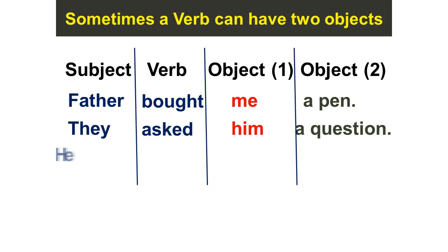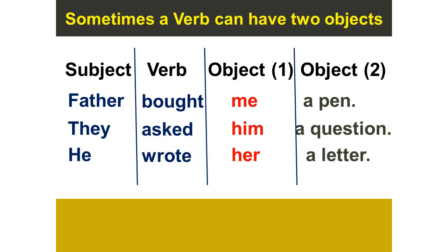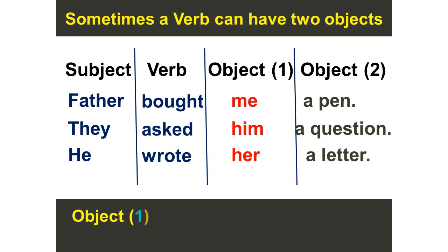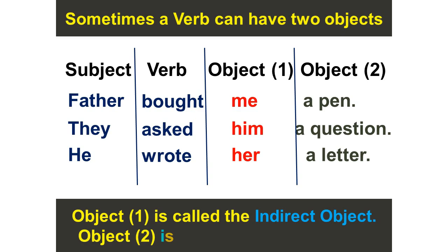He wrote her a letter. Object 1 is called the indirect object and object 2 is called the direct object.